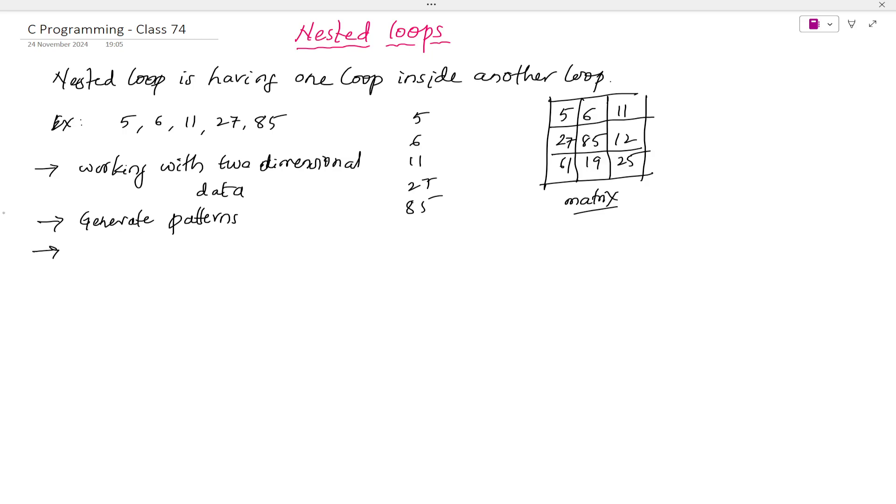This is used for working with matrix, which is two-dimensional arrays or 2D arrays. One-dimensional means row-wise or column-wise. Two-dimensional means row and column-wise, where we can store data in any way. That's why we use nested loops, also called matrix.